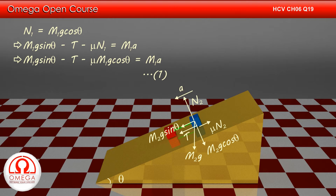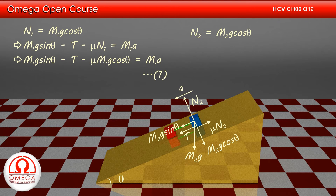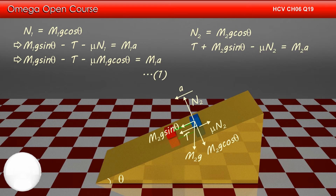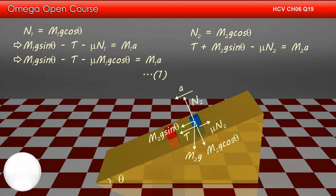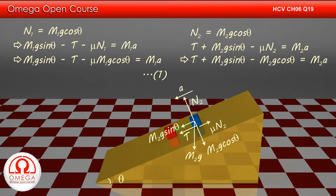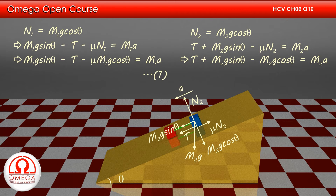Balancing the forces perpendicular to the incline, we get N2 = M2g cos theta. Writing the equation of motion along the incline, we get T plus M2g sin theta minus mu·N2 equals M2a. Putting the value of N2, we get T plus M2g sin theta minus mu·M2g cos theta equals M2a.